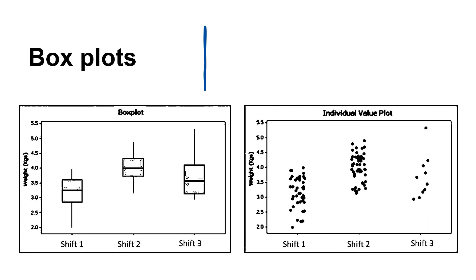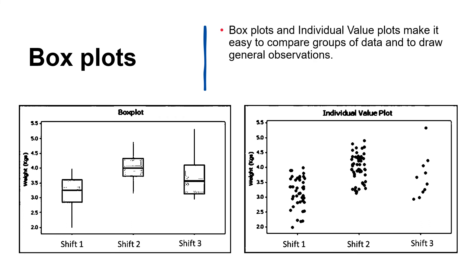Box plots and individual value plots make it easy to compare groups of data and to draw general observations. You can see here the box plots - it appears that weights in Shift 2 are generally heavier than Shift 1.